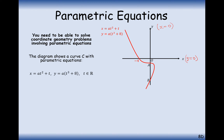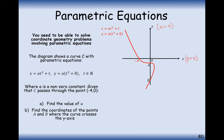We're going to be working out coordinates A and B, but along the way we need to work out this small 'a' value so that we have a constant in our equations. We have x equals at squared plus t and y equals at cubed plus 8.